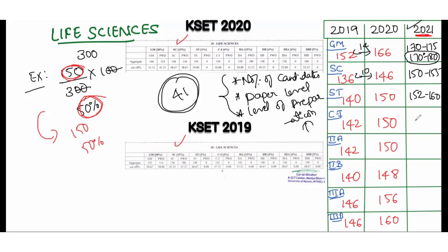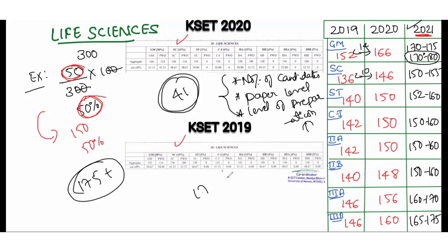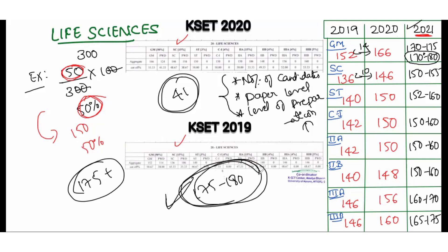For category 3B, around 165 to 175 is the safest marks. This is just tentative — it is the expected cutoff. If you are in the range of 175 to 180 plus, that is the safest mark. It may increase, it may decrease — we can't predict the cutoff exactly. But this is the somehow expected cutoff, and for general merit it will likely come around in this range itself.